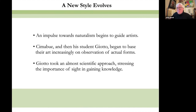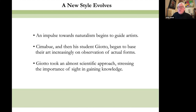So this impulse toward more naturalistic art begins to be a signpost, a kind of guide for artists. Naturalism takes many years to truly develop, and in painting it means the development and rediscovery of scientific perspective. Over time, this is where they're going. And then Cimabue, and then his very great student Giotto, begin to base their art increasingly on the observation of real forms.